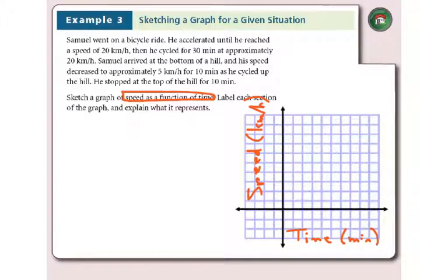So if we look, we have a 30 minute section at 20 kilometers per hour. We have a 5 kilometers an hour for 10 minute section. And last, we have another 10 minute section where we were stopped. So total time, we have 50 minutes.